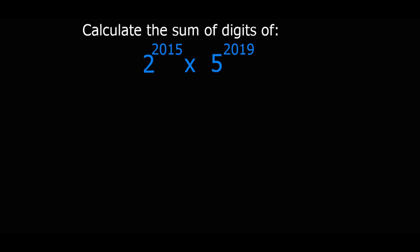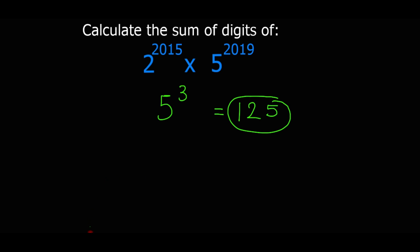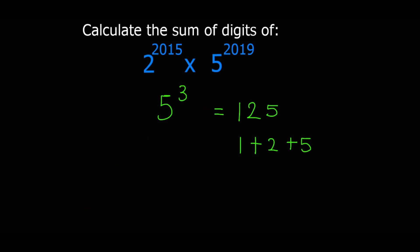Let's say we have 5 to the exponent 3 and we want to find the sum of digits. We know that 5 to the exponent 3 is 125. To find the sum of digits, we are going to add these digits: 1 plus 2 plus 5, which gives us 8. So this is the sum of the digits.